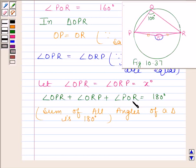Substitute the value of angle OPR, angle ORP, and angle POR in this equation. Angle OPR is equal to X degrees. Angle ORP is equal to X degrees. Angle POR is equal to 160 degrees.